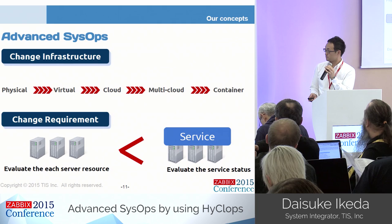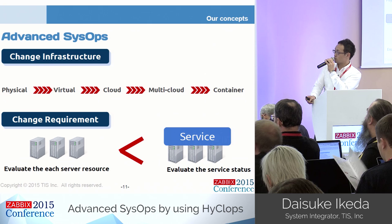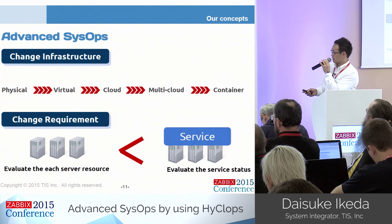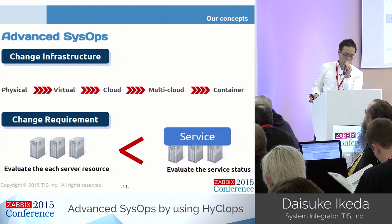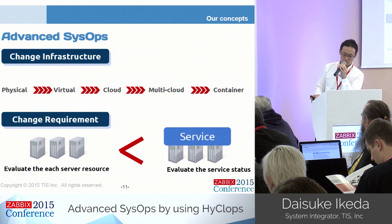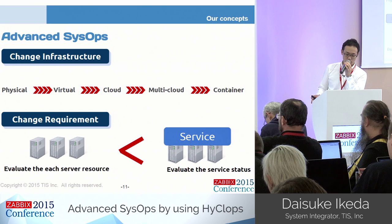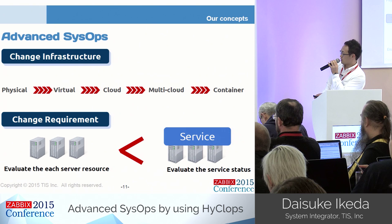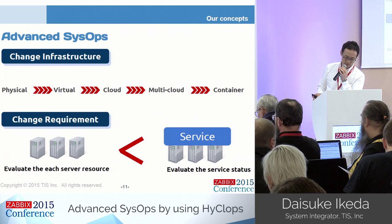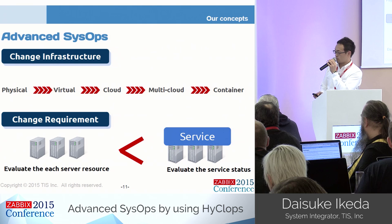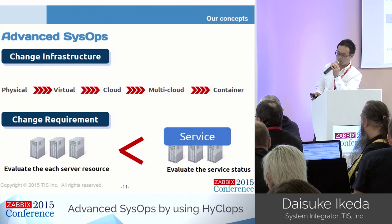Nowadays, infrastructure has changed from physical machines to virtual environments, cloud services, multi-cloud environments, and container environments such as Docker. Because of this change, service providers have come to remove broken resources and deploy new resources continuously to keep service levels. The status of the entire service system is more important than the status of each individual server. In this situation, conventional simple threshold-based monitoring might be limited.